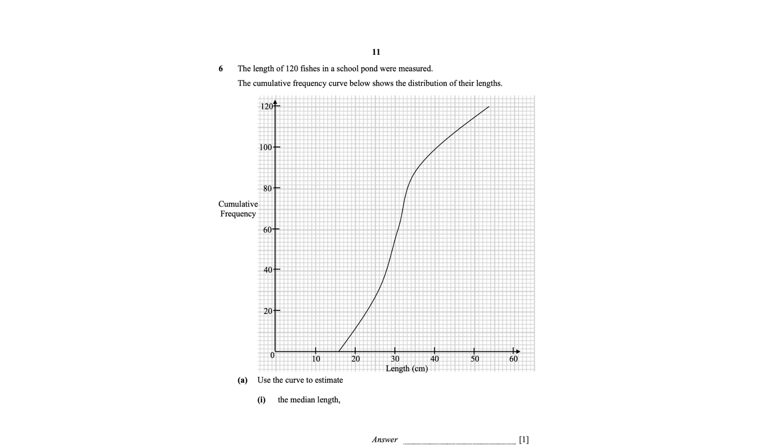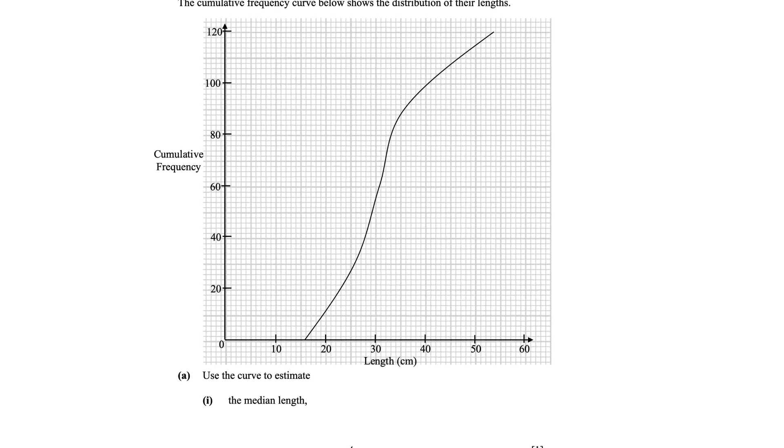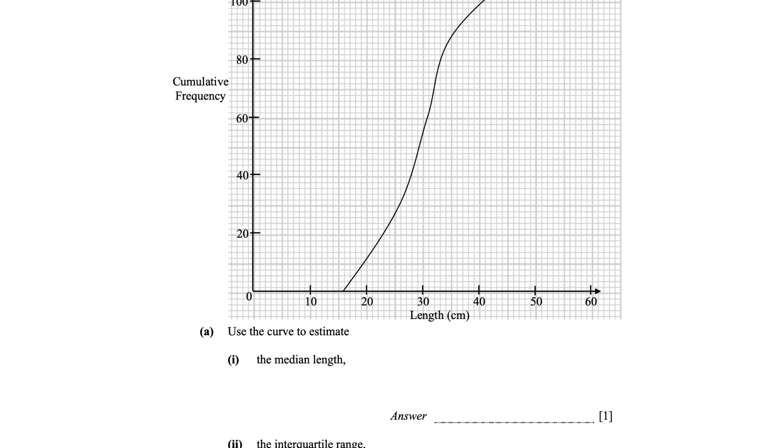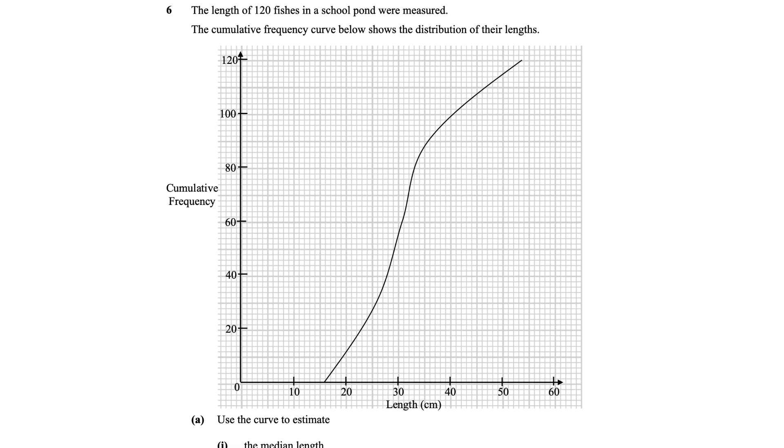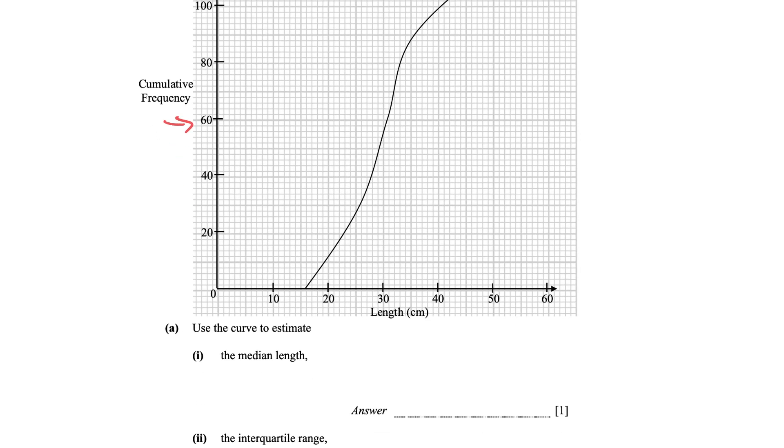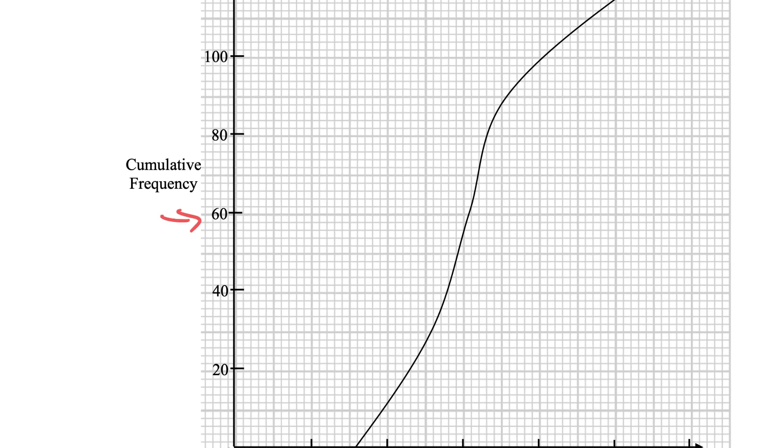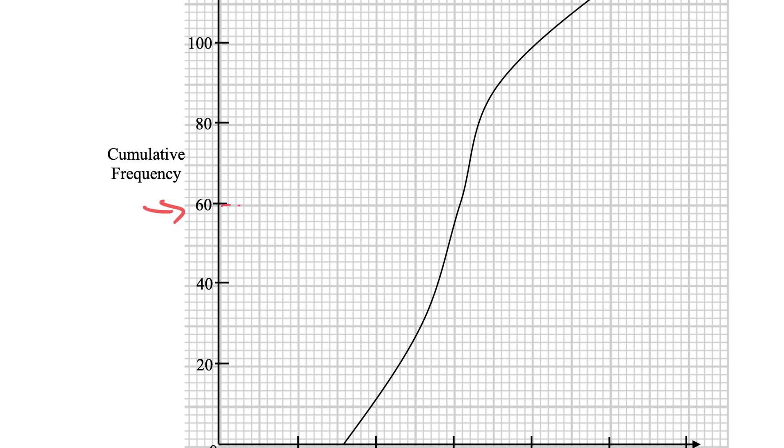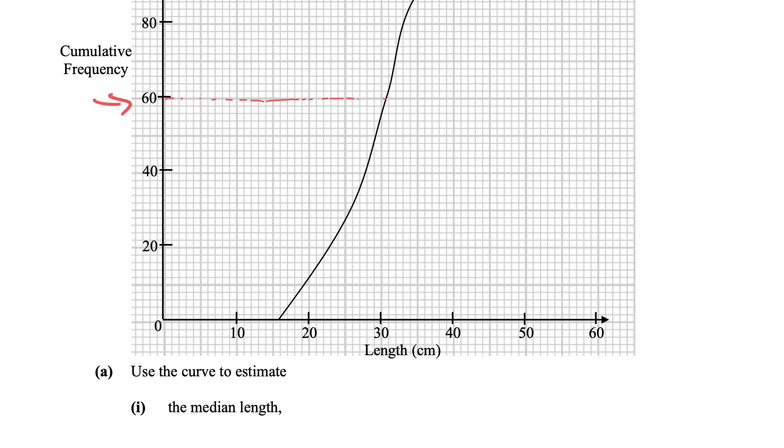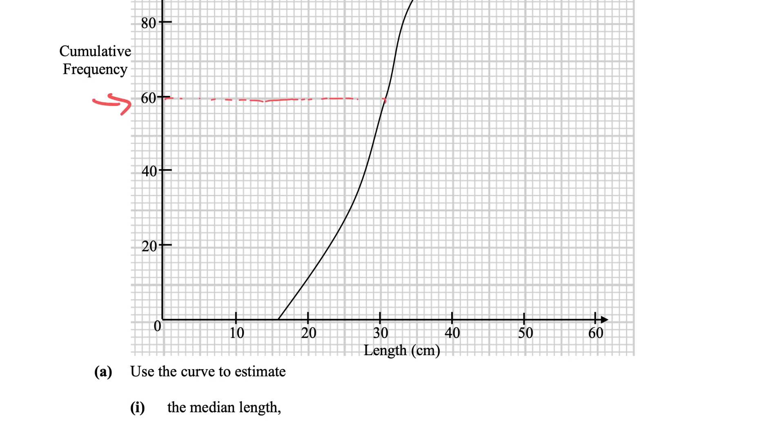Right now we want to see if you can use the curve to estimate the median length. If it's a total of 120 fishes, the median will just be at 60, right? That's half, 60. So we look closely and we go and find where we are, and we go all the way down.